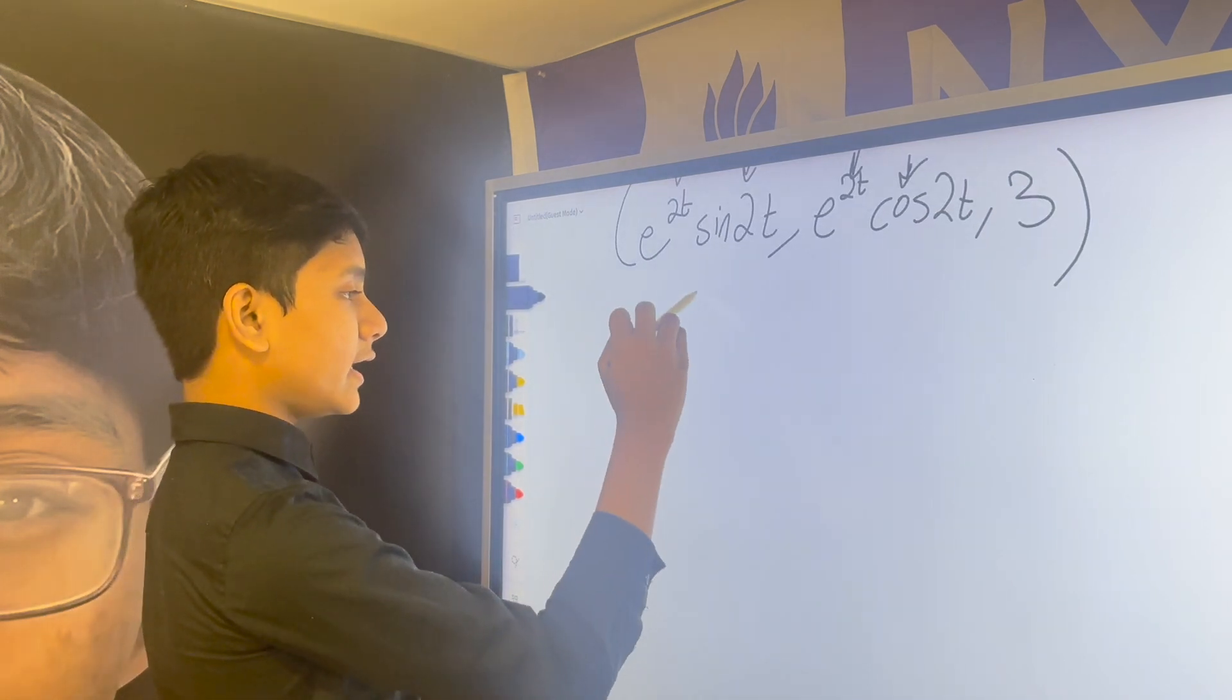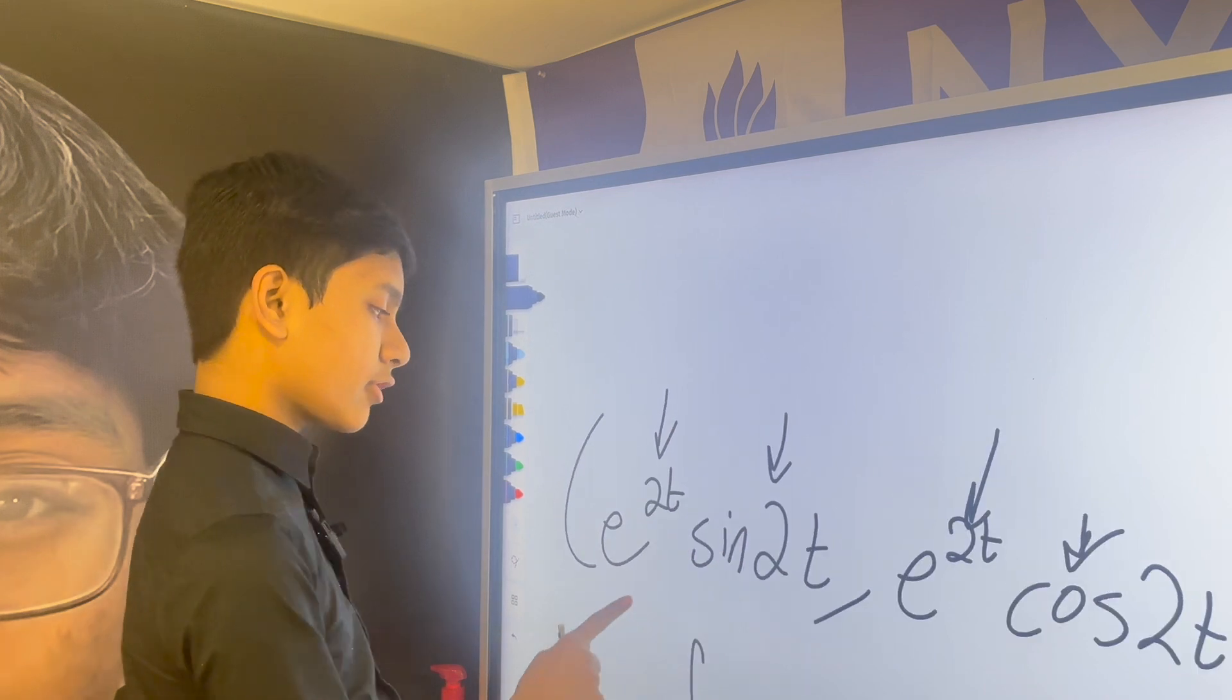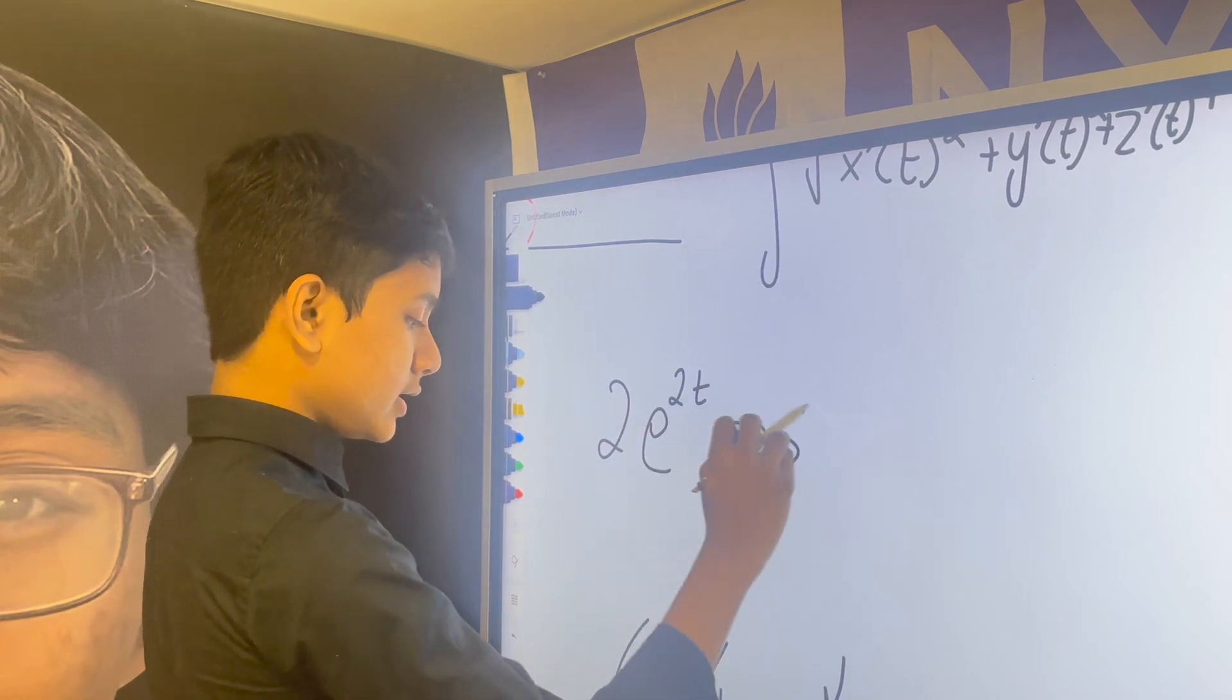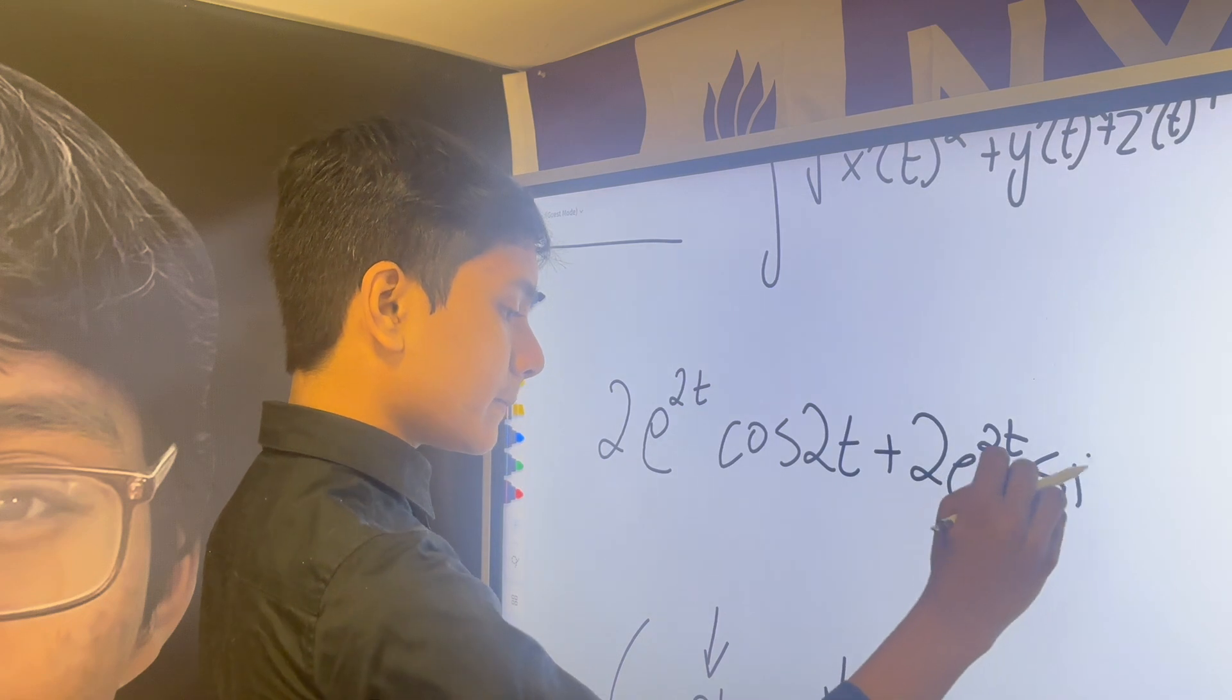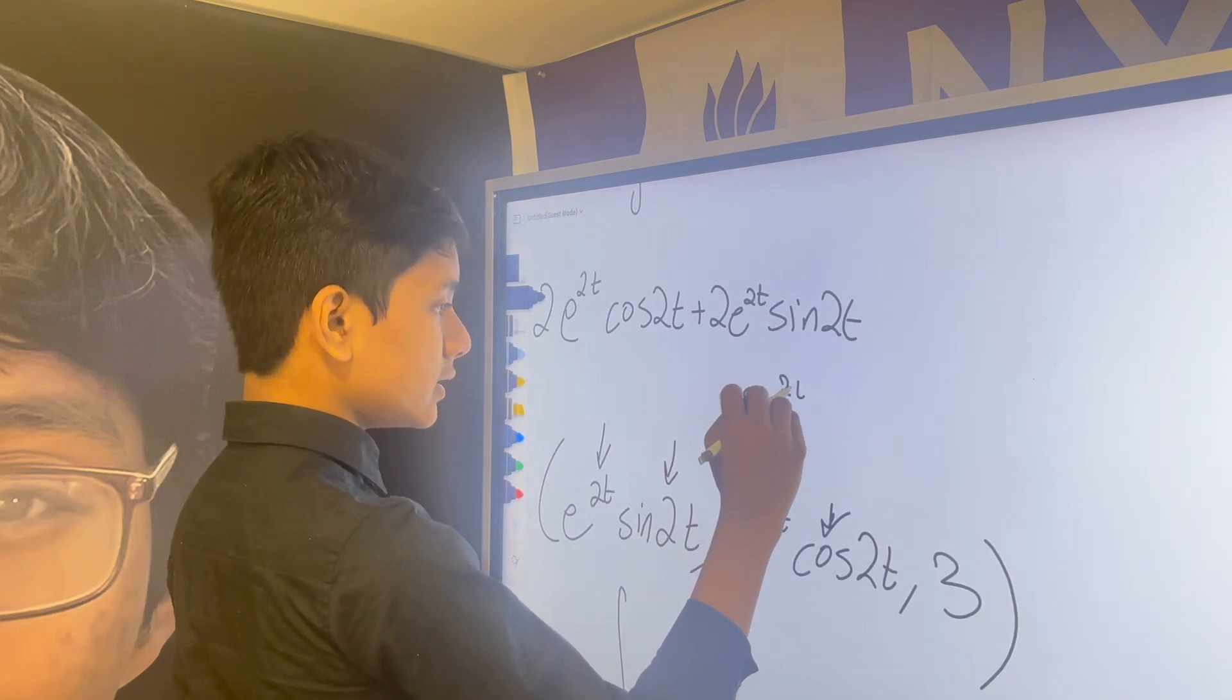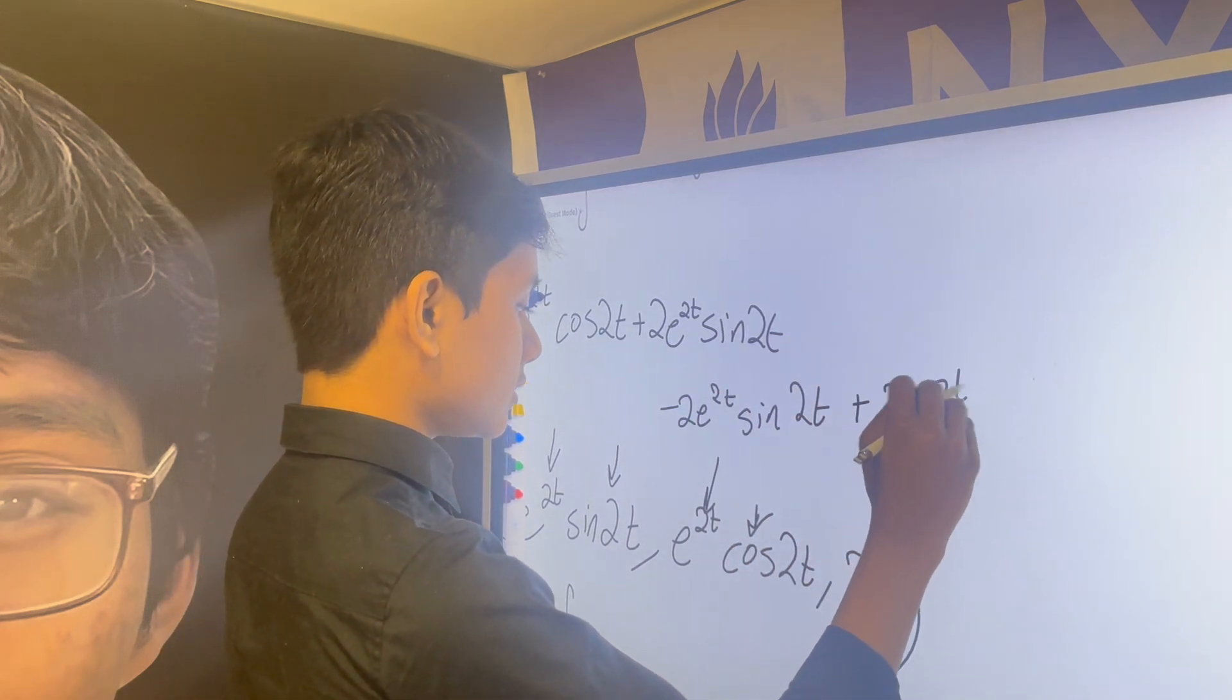Well, we have the integral of the square root of what's this? Well, we first have to take the derivative. So, that's just 2e^2t cosine 2t plus 2e^2t sine 2t. Then, we have to take the derivative of that, which is 2e^2t, well, negative sine 2t plus 2e^2t cosine 2t.